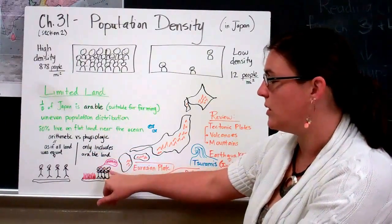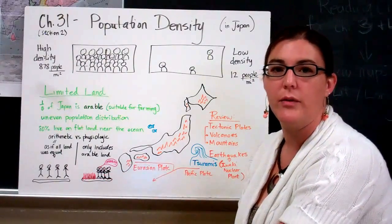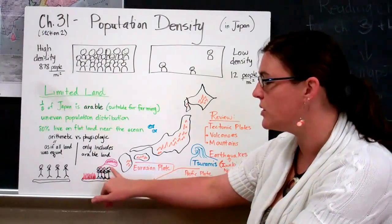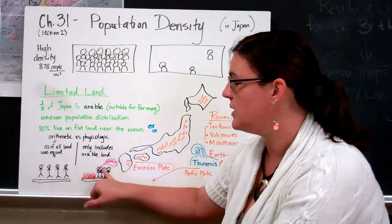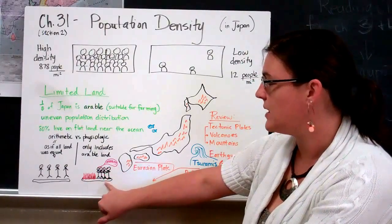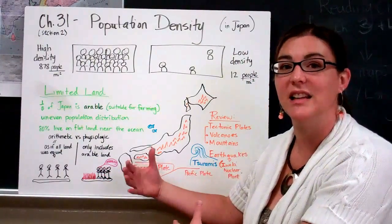...as opposed to physiologic numbers which are more accurate because they only include arable land, meaning that I'm only going to be able to spread out on land that's available to me, not land that's a fiery volcano lava pit. So I'm going to be more squished together even though these would have the same arithmetic population density. This number is going to be more accurate to how much space people actually have to live in.